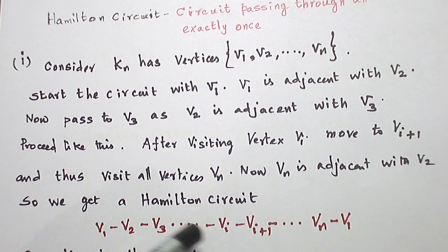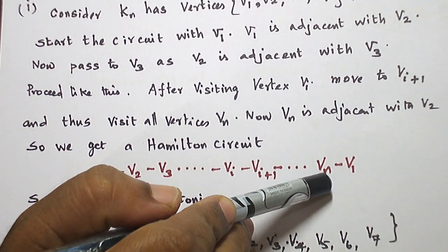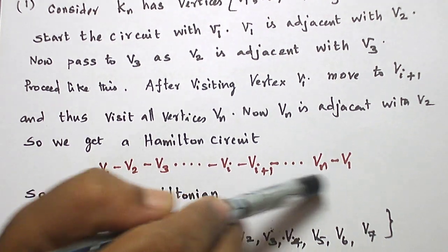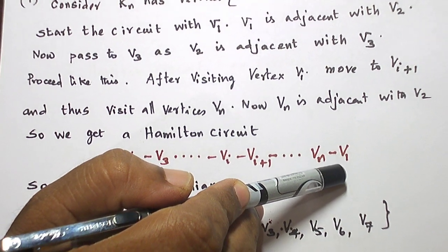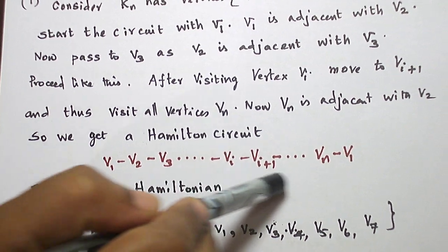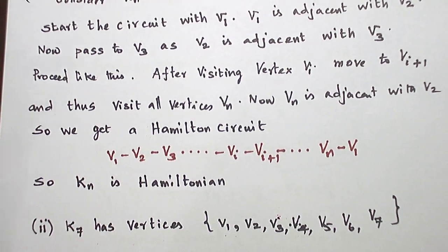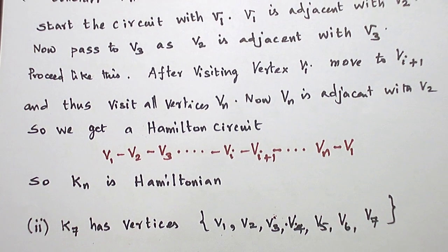And if we proceed in this way, we will end at Vn. And Vn is adjacent with V1. So we will close the circuit with V1. So this is a Hamilton circuit passing through all the vertices of the graph exactly once. So KN is Hamiltonian.